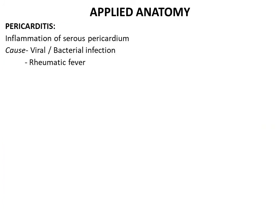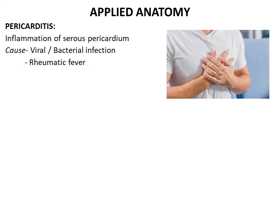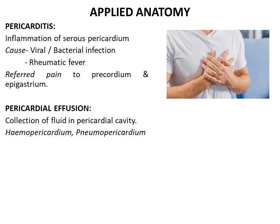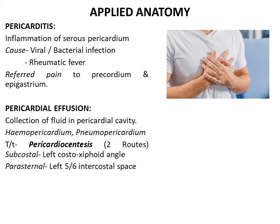Pericarditis is inflammation of the serous pericardium, usually caused by a viral or bacterial infection, with rheumatic fever being a common cause. Pain originates in the parietal pericardium, which is sensitive to pain, and referred pain is usually felt in the region of the precordium and epigastrium. Pericarditis may lead to accumulation of fluid in the pericardial cavity — pericardial effusion. Blood in the pericardial cavity is hemopericardium; air is pneumopericardium. Treatment of pericardial effusion is pericardiocentesis — aspiration of pericardial fluid with a needle.